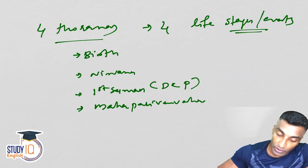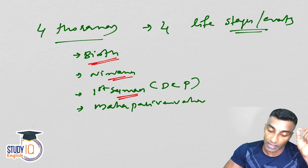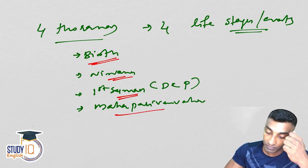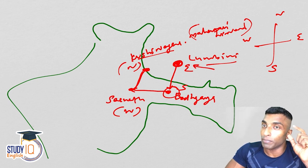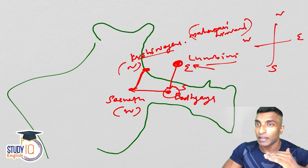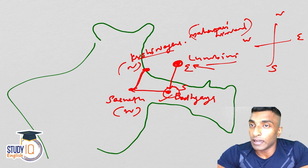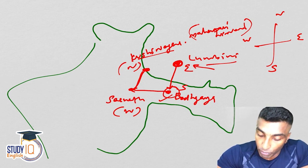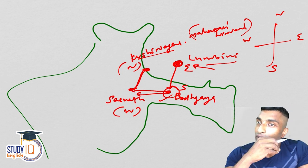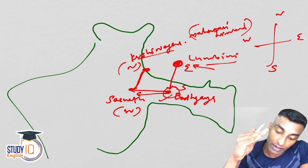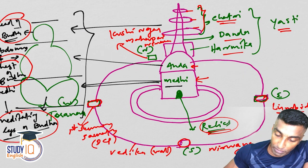What are the four different life stages? They are: birth, Nirvana, Dharma Chakra Parivartan — that is the first sermon which happened in Sarnath — and then Mahaparinirvana. The East gate signifies the birth, that is at Lumbini. The South gate signifies Nirvana, which is at Bodh Gaya. The West side is Sarnath, representing the first sermon. And then Kushinagar is the last stage, that is Mahaparinirvana.